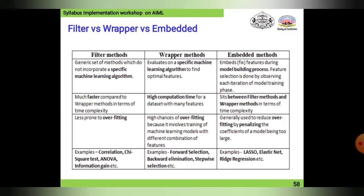The filter method is much faster compared to the wrapper method in terms of time complexity. The wrapper method has high computation time for datasets with many features. The embedded method sits between filter and wrapper methods in terms of time complexity, so it will not go to higher or lower specification extremes — it is the ideal approach.